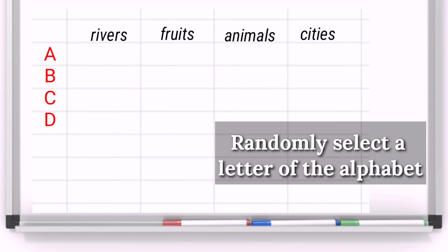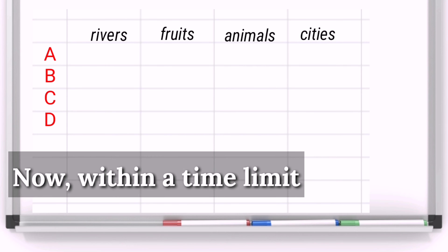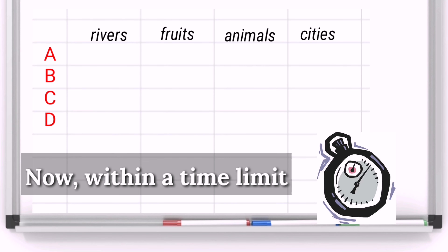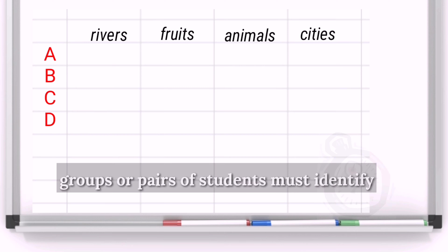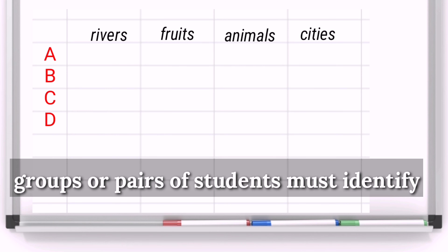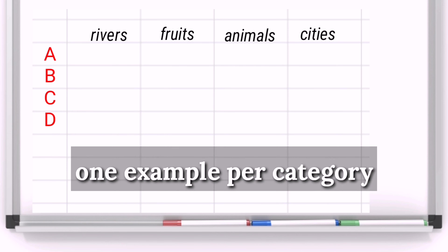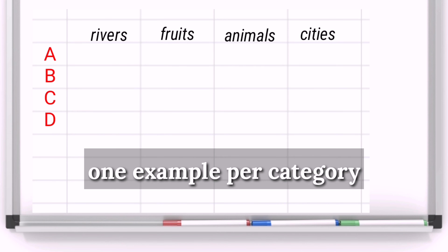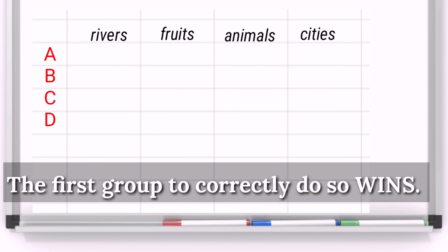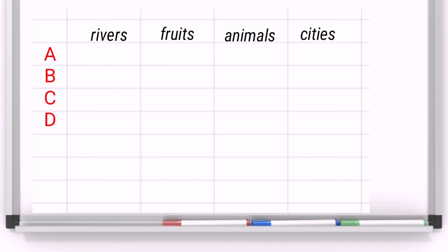Randomly select a letter of the alphabet. Now, within a time limit, groups or pairs of students must identify one example per category. The first group to correctly do so wins.